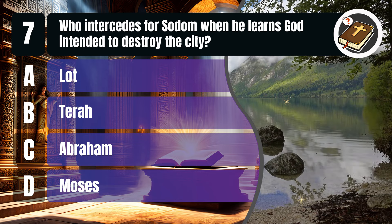Question 8. Who was turned into a pillar of salt when she looked back towards Sodom and Gomorrah? A. Lot's wife. B. Lot's sister. C. Lot's mother. D. Lot's daughter. You get 10 seconds.